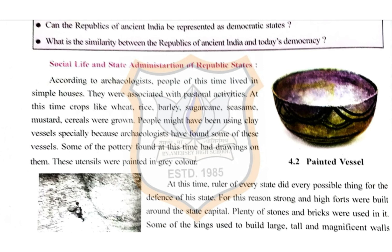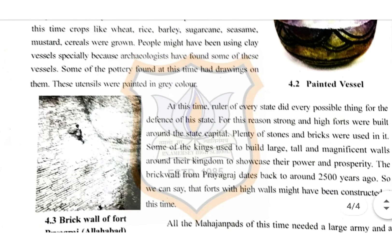According to archaeologists, people of this time lived in simple houses and were associated with pastoral activities. At this time, crops like wheat, rice, barley, sugarcane, sesame, mustard, and cereals were grown. People might have been using clay vessels, as archaeologists have found some of these vessels.